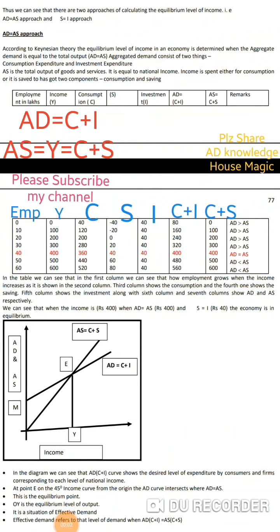Today we will discuss the topic of equilibrium level of income. Equilibrium level of income is determined by two approaches. First one is the AD equal to AS approach. Second one is the saving equal to investment approach.